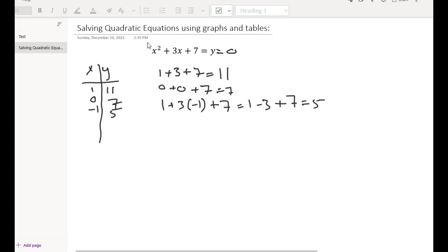So we go minus 2. Minus 2 squared is 4 plus 3 times minus 2 plus 7. We got 4 minus 6 plus 7 equals 5. So that means we're almost at the bottom of the curve. But let's just see.